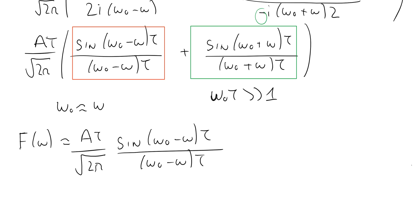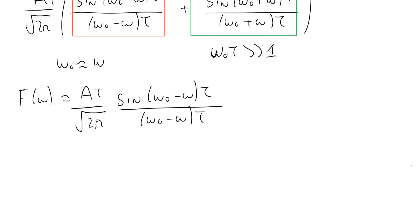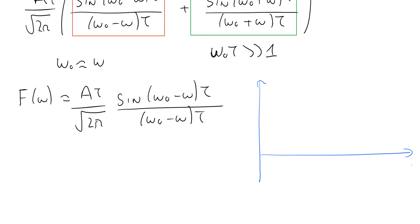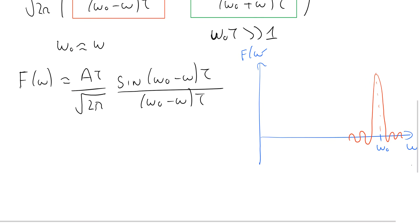What we see is a sinc function centred around omega-0. If we sketch this function — with omega on the horizontal axis and f of omega on the vertical axis, marking omega-0 — it looks like a sinc function centred at omega-0, just like the sinc functions we've met already, except now centred at omega-0 rather than zero.